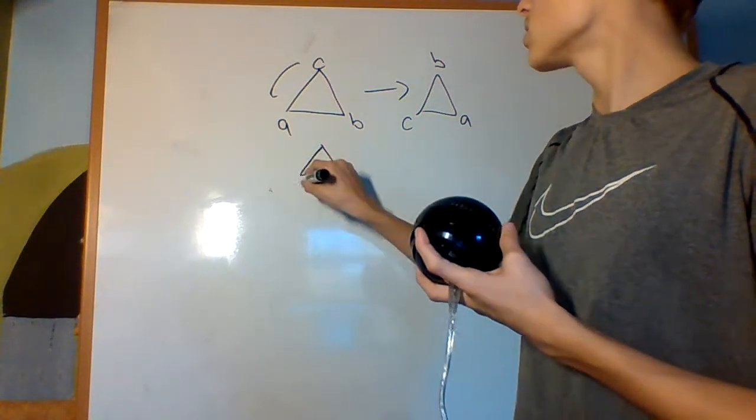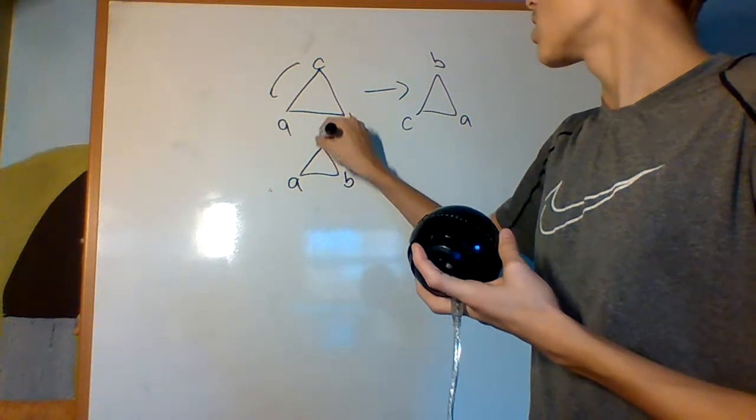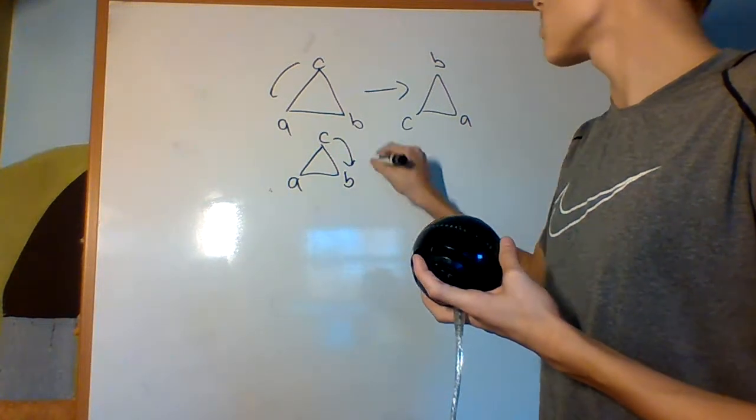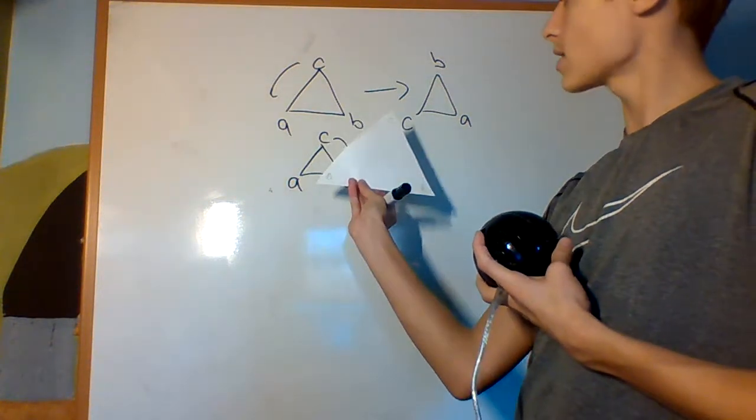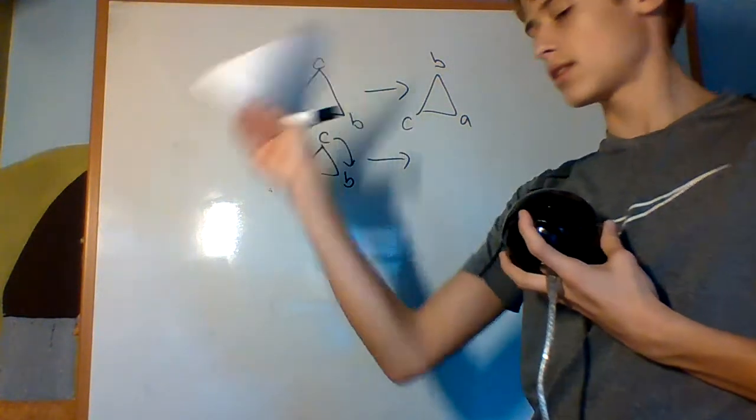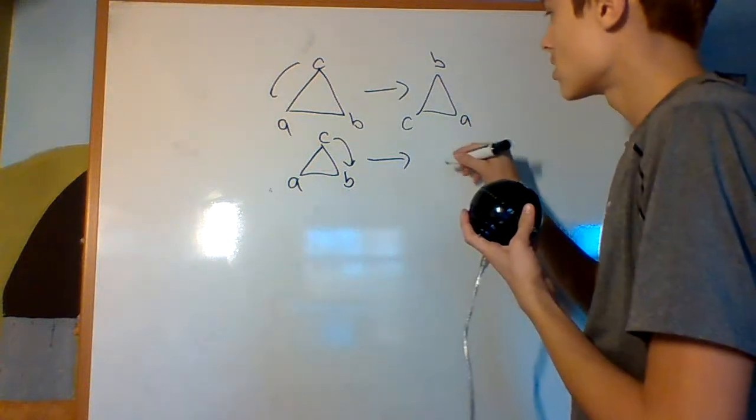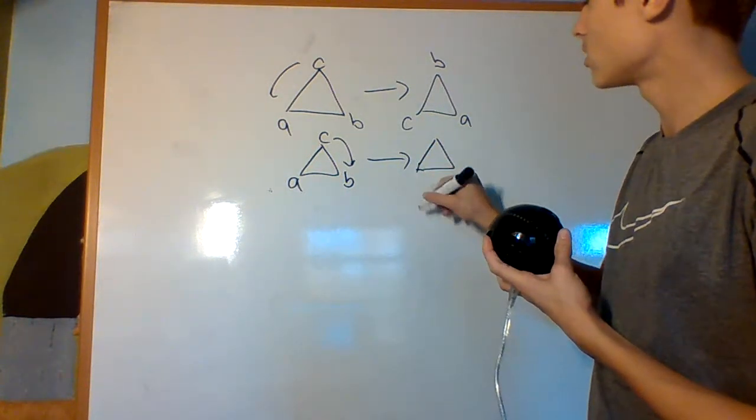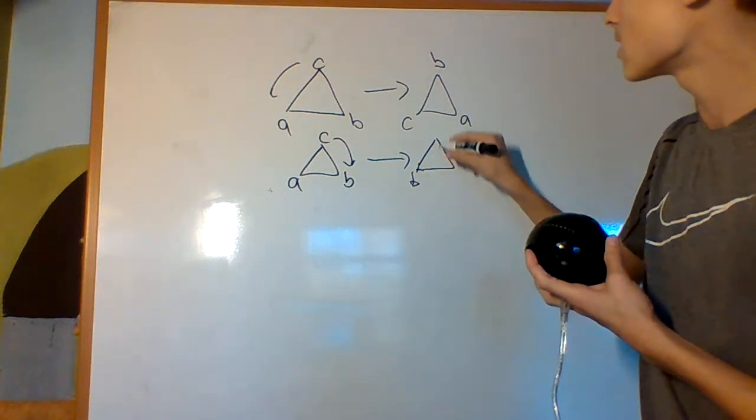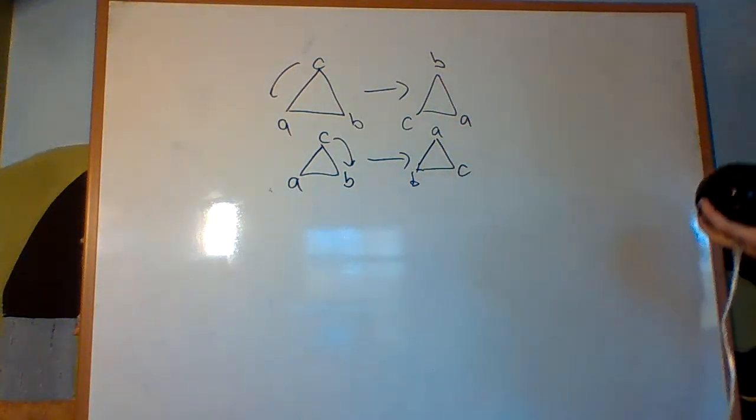Another thing I can do with this triangle is rotate it in the opposite direction. So, from that to that, okay, so that's going to be the triangle B, A, C.